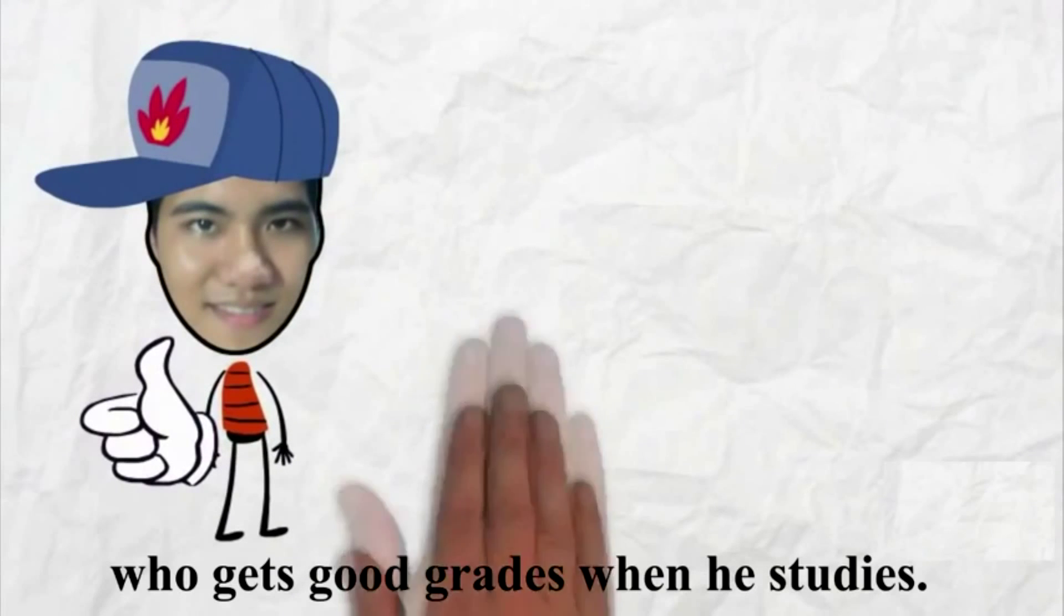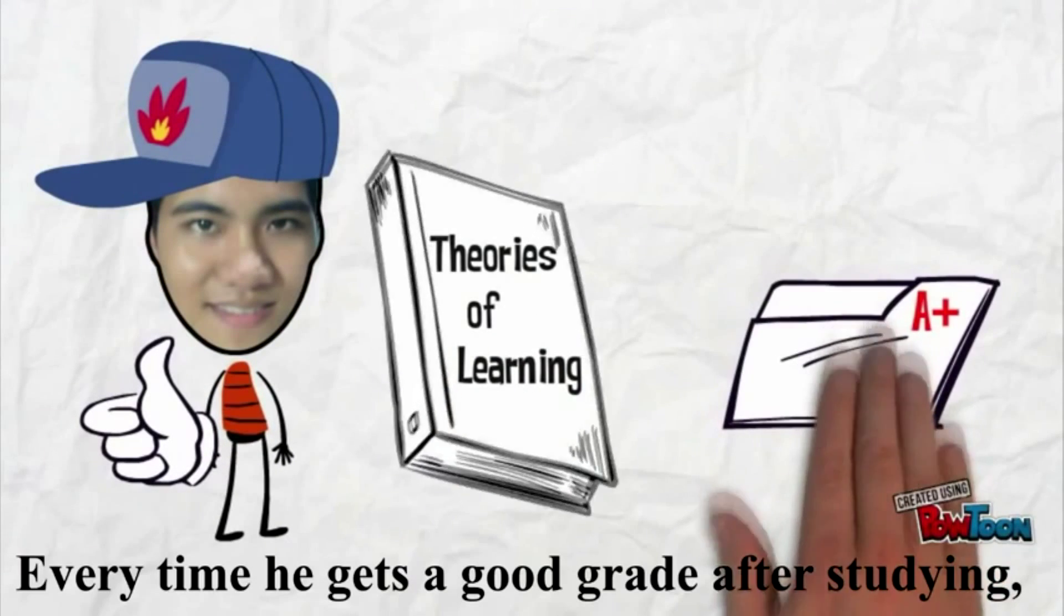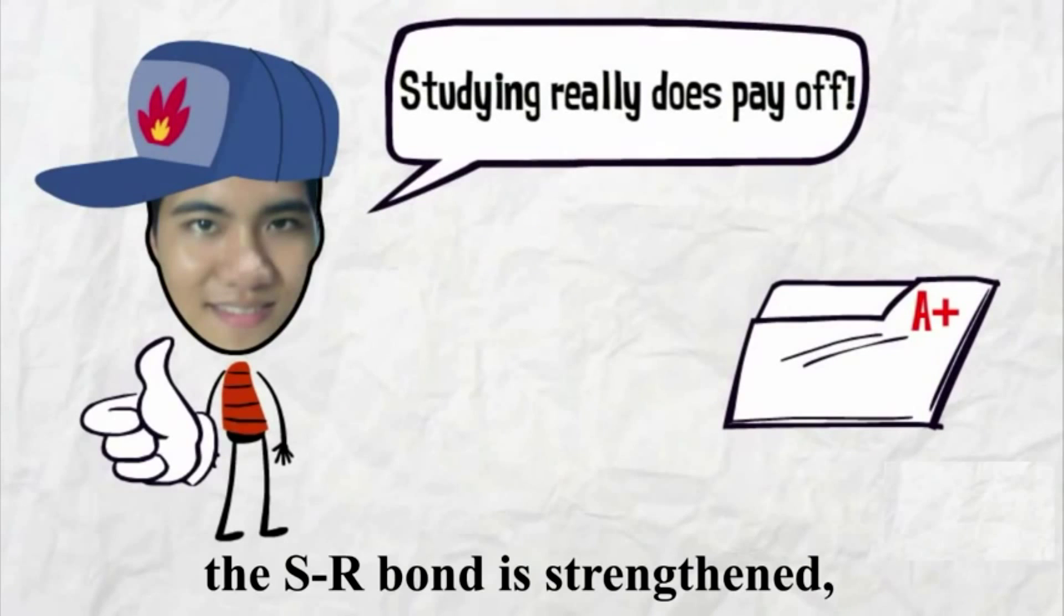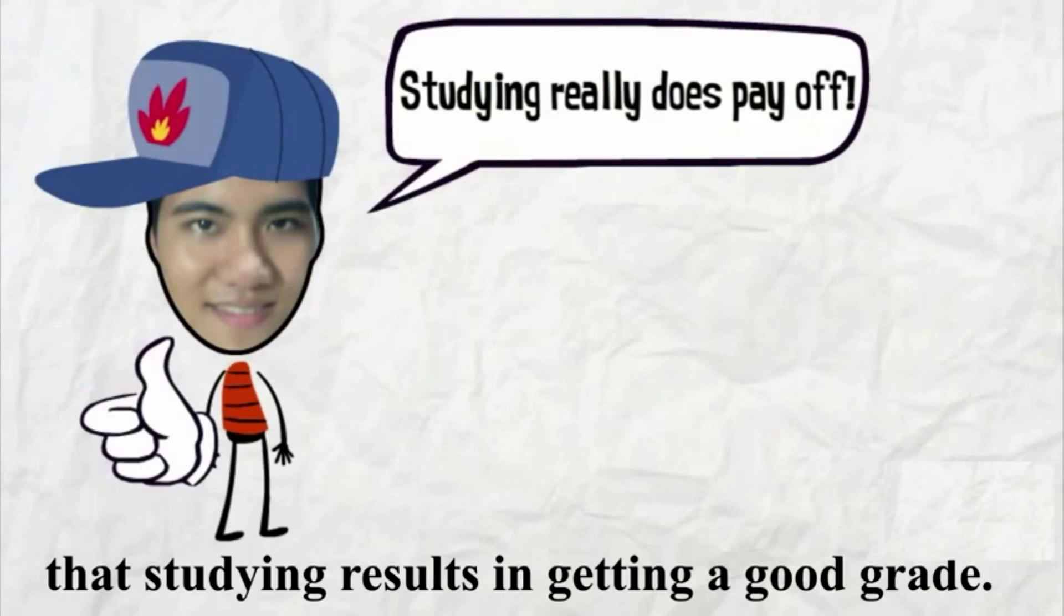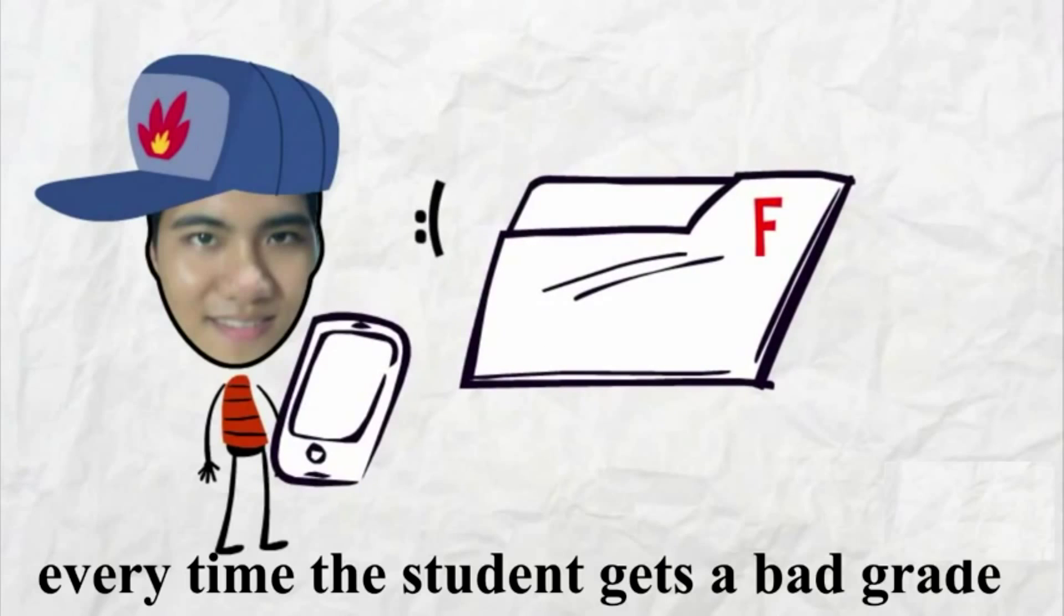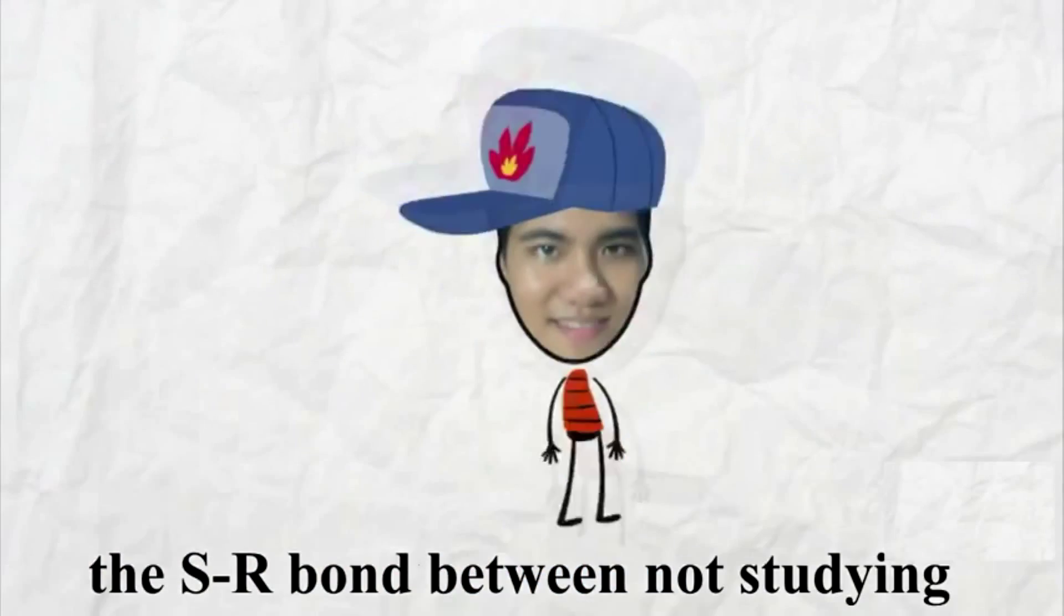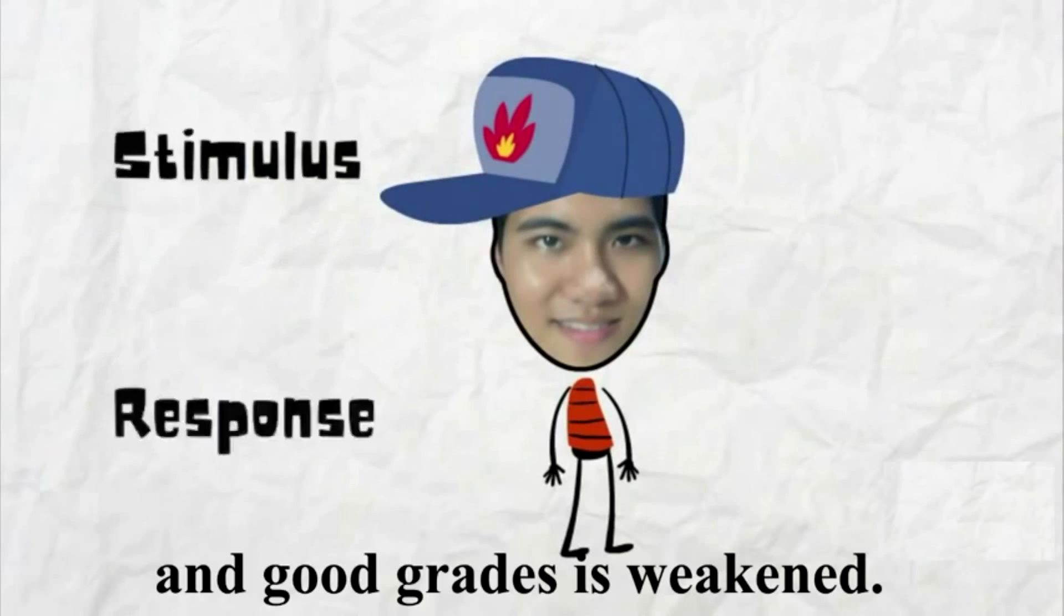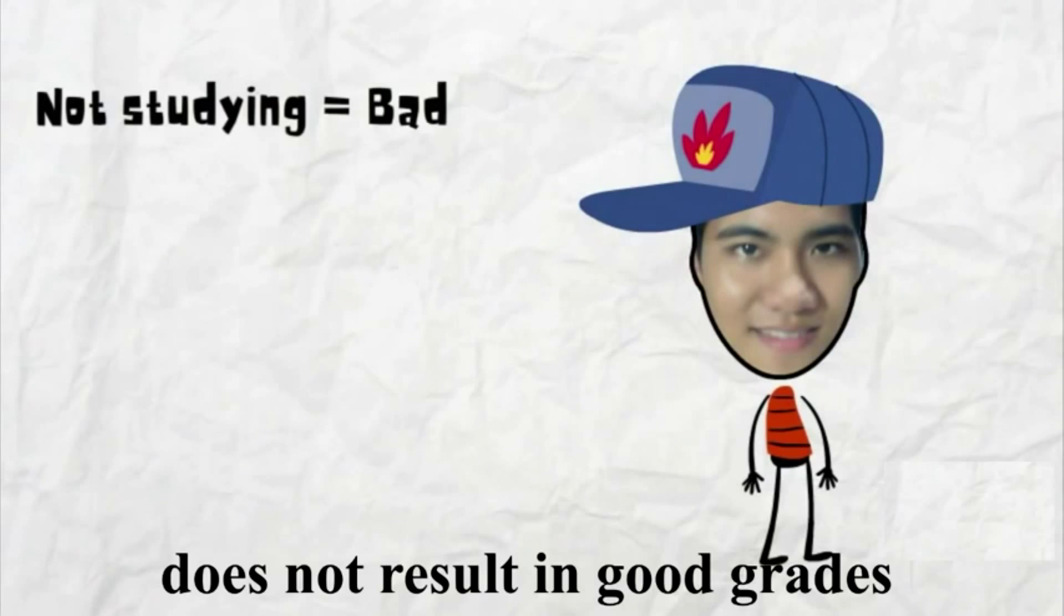Think about Vincent's student who gets good grades when he studies. Every time he gets a good grade after studying, the SR bond is strengthened, and the student learns even more that studying results in getting a good grade. On the flip side, every time the student gets a bad grade after not studying, the SR bond between not studying and good grades is weakened. The student learns that not studying does not result in good grades and is less likely to not study in the future.